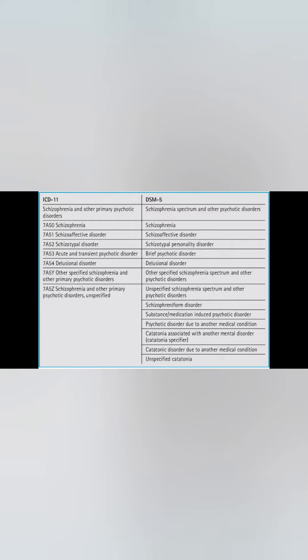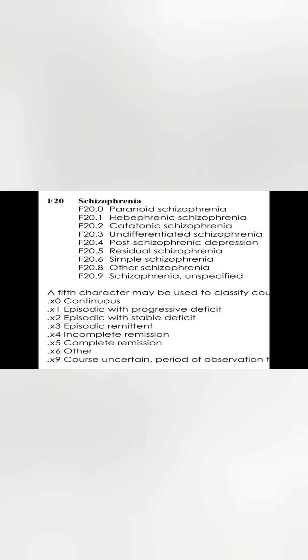Let us look at the categories of schizophrenia in ICD-11 and DSM-5, and then the categories of schizophrenia in ICD-10. In ICD-10, the categories include: paranoid schizophrenia, hebephrenic schizophrenia,